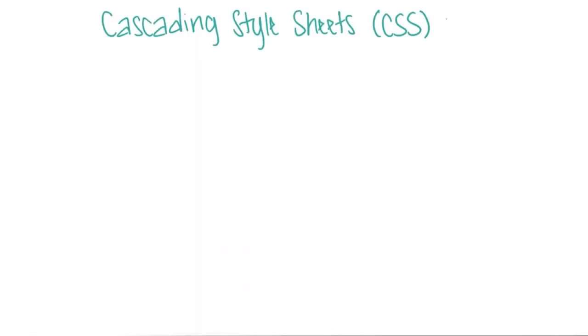But what do cascading and sheets mean? You can have several CSS files, or sheets, that will be referenced in HTML, and all of them will be used to find out the final and visible style for your page.